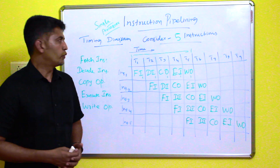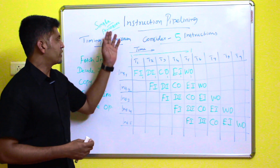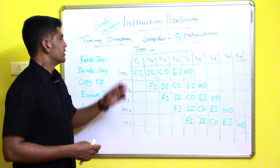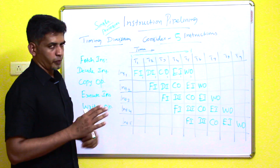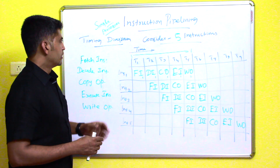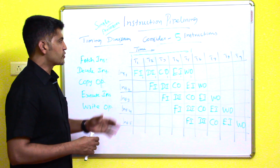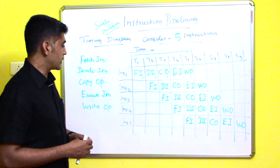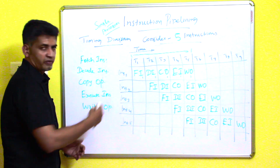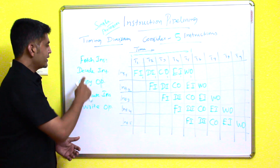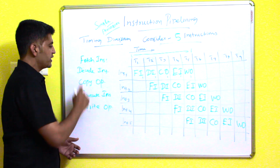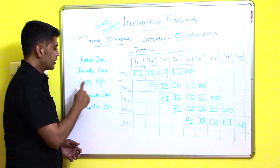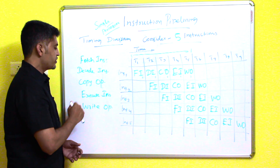In this video we are going to discuss instruction pipelining for a single processor. Looking at the timing diagram, if you consider instruction execution there are five major phases: instruction fetch, instruction decode, and operand fetch.